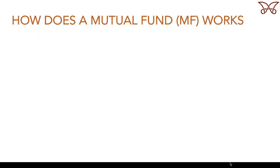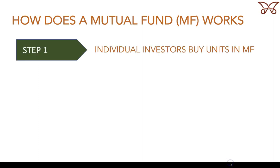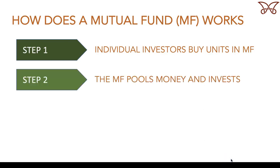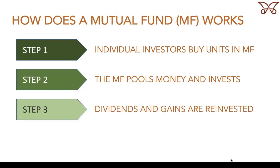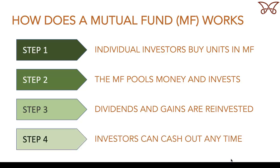Here are the basic mechanics of investing in a mutual fund. Step 1: Investors buy shares in the mutual fund. Step 2: The fund pools investors' money and uses it to buy a portfolio of investments, typically stocks and bonds. Step 3: Dividends, interest, and gains are paid back to investors, who can choose to reinvest them in the fund. Step 4: Investors can cash out of the mutual fund at any time.